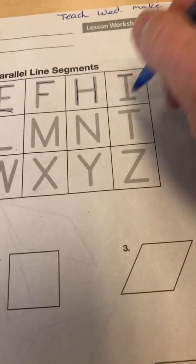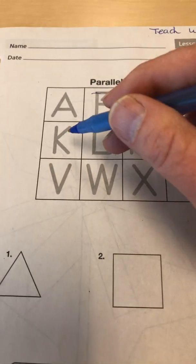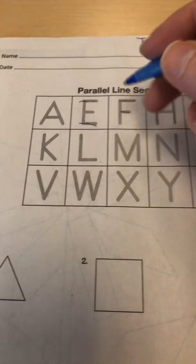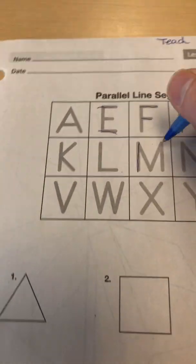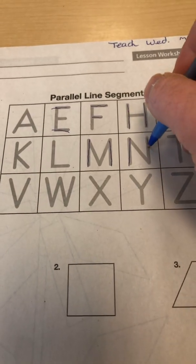and the I. The L and K, they are not parallel. But the horizontal lines on the M are, the horizontal lines on the N are.